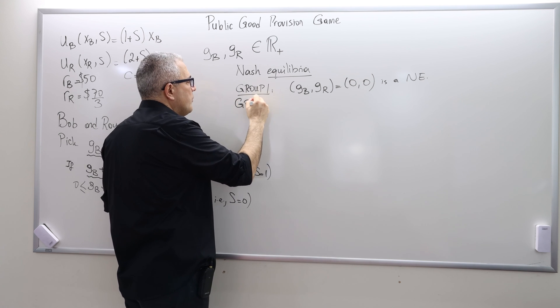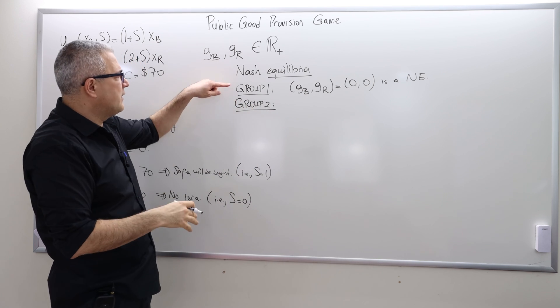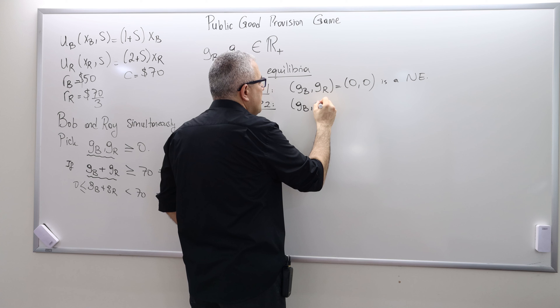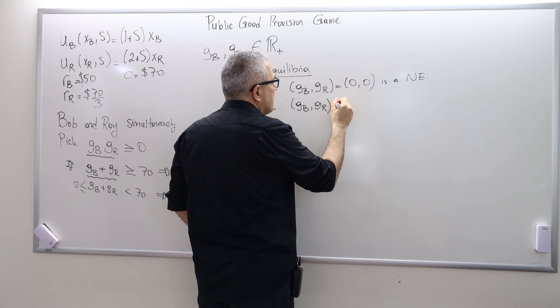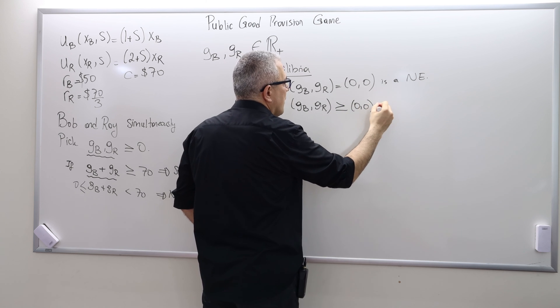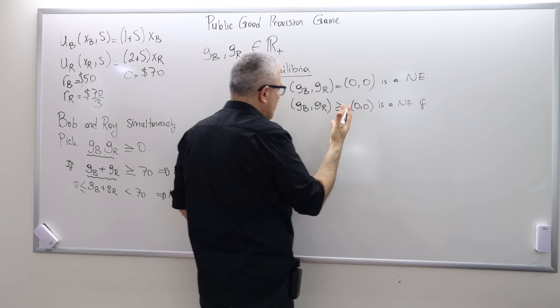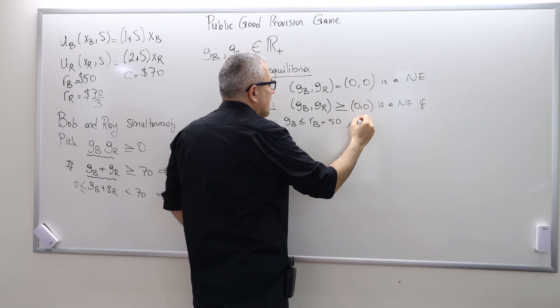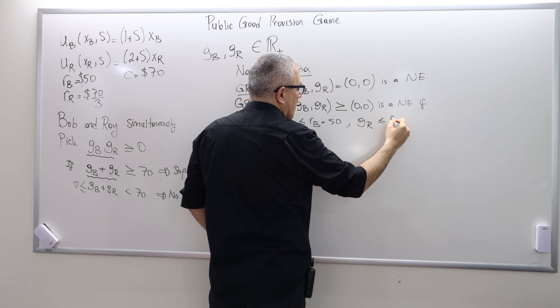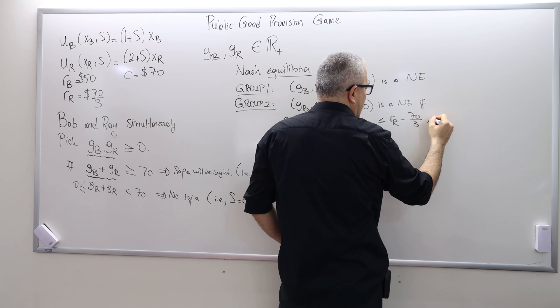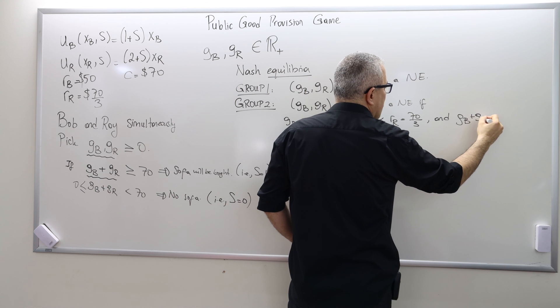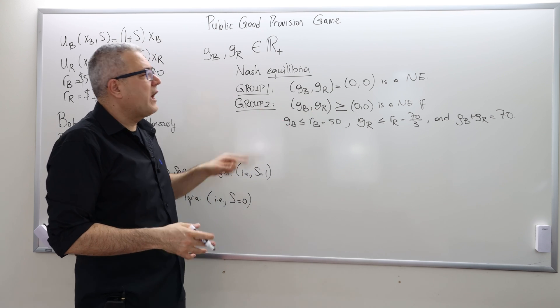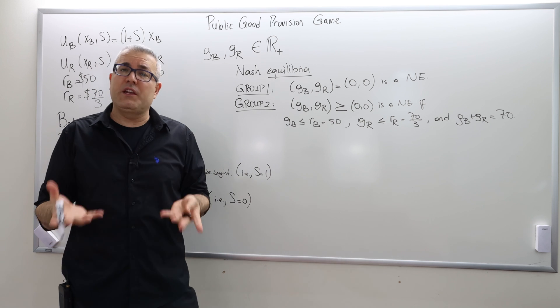There's a group two. So here in this group there are many. In this group one there's only one Nash equilibrium, but in group two there are many Nash equilibria. What are they? Well, GB, GR greater than or equal to 0, is a Nash equilibrium if, whenever GB is less than RB which is $50, GR less than RR which is 70 divided by 3, and GB plus GR exactly equal to $70. So basically all Pareto efficient ways of splitting the cost is also Nash equilibrium.